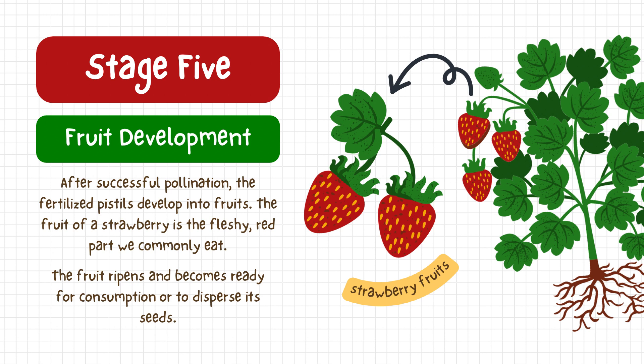Stage five is fruit development. After successful pollination, the fertilized pistils develop into fruits. The fruit of a strawberry is the fleshy, red part we commonly eat. The fruit ripens and becomes ready for consumption or to disperse its seeds.